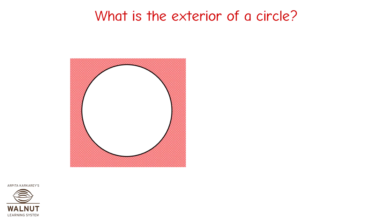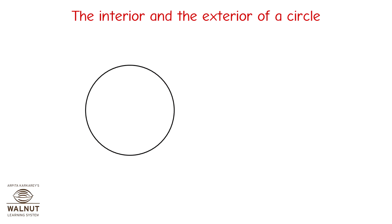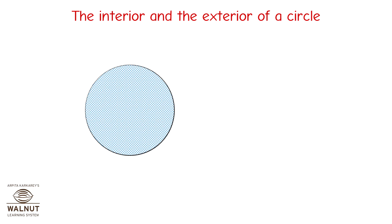What is the exterior of a circle? Exterior means outside. The exterior part of a circle is the part outside the circle. The interior and the exterior of a circle.